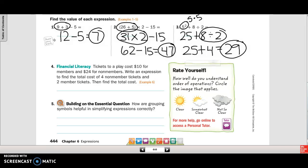And then our last one on this page, number 4, tickets to a play cost $10 for members. So we have $10, $24 for non-members. Write expression to find a total cost of 4 non-member tickets. So we have non-member tickets are 24, so 24 times 4, and so we're going to add 2 member tickets. So 2 times 10.